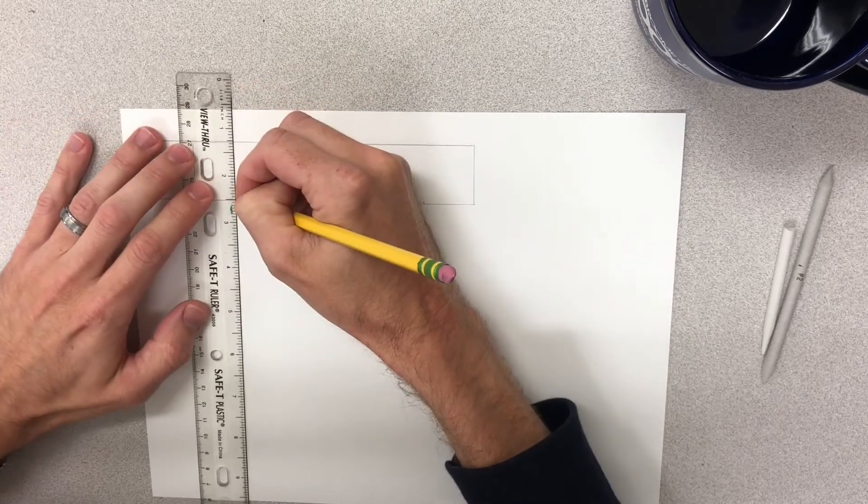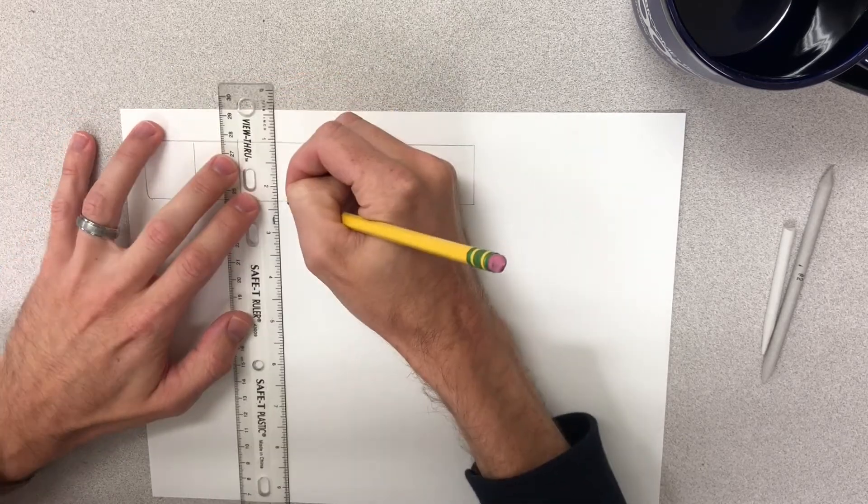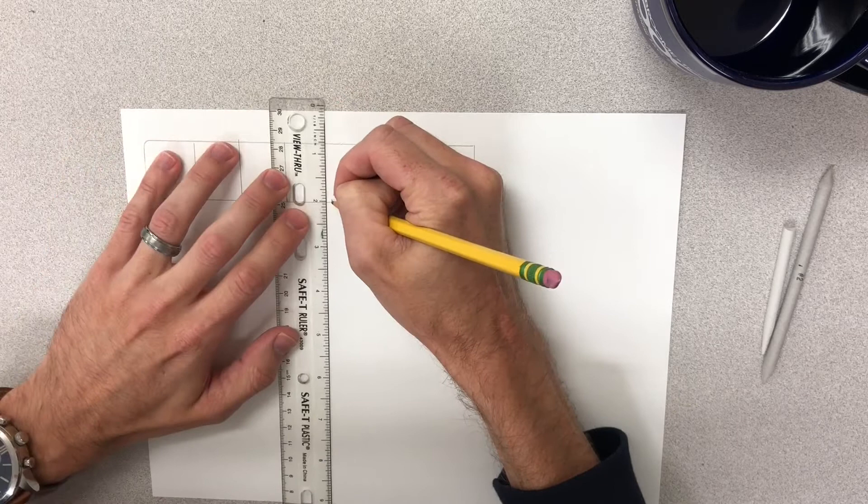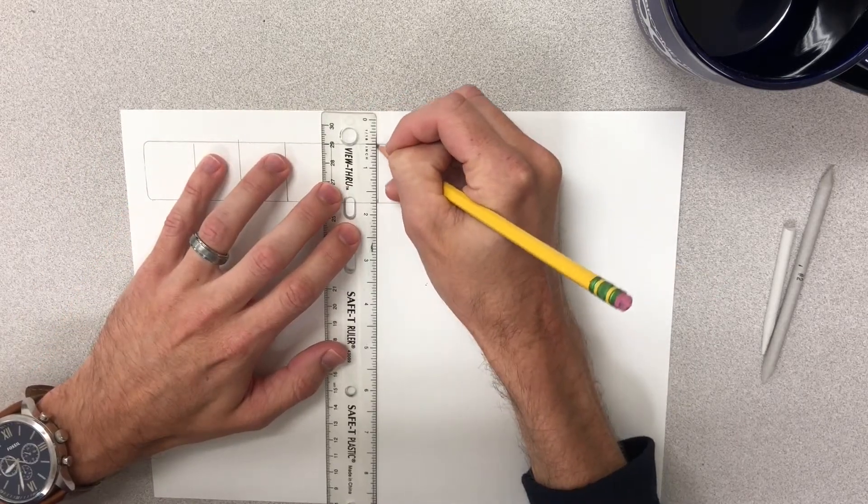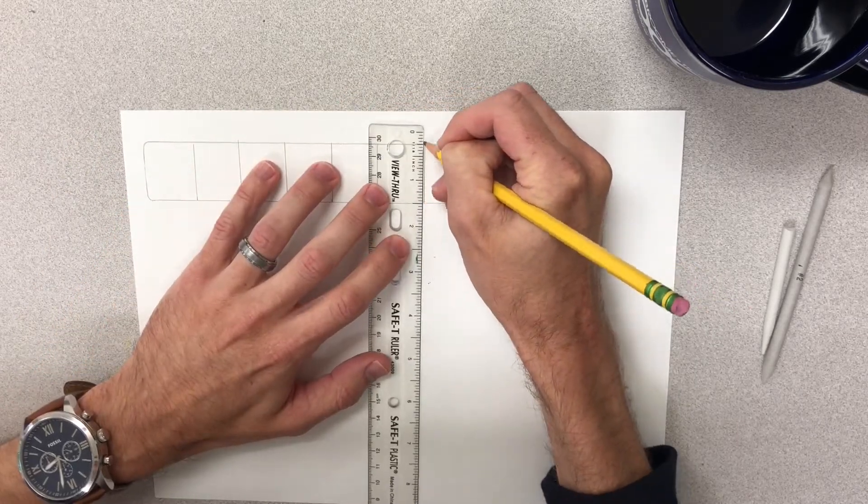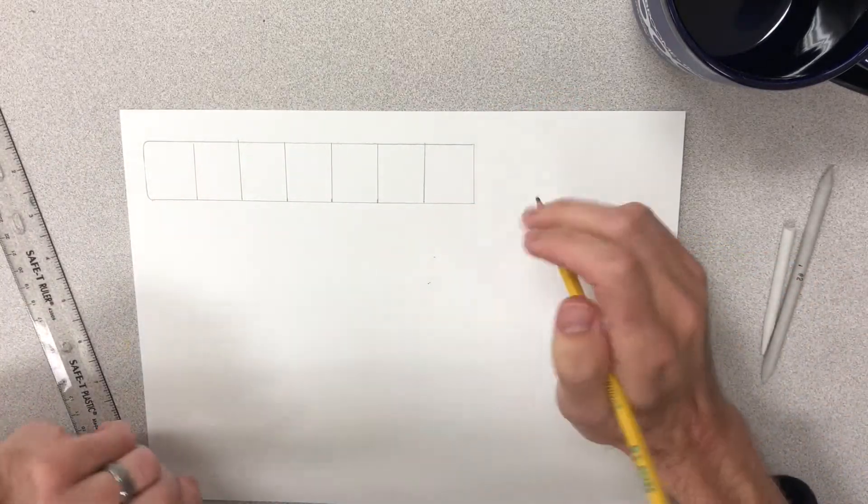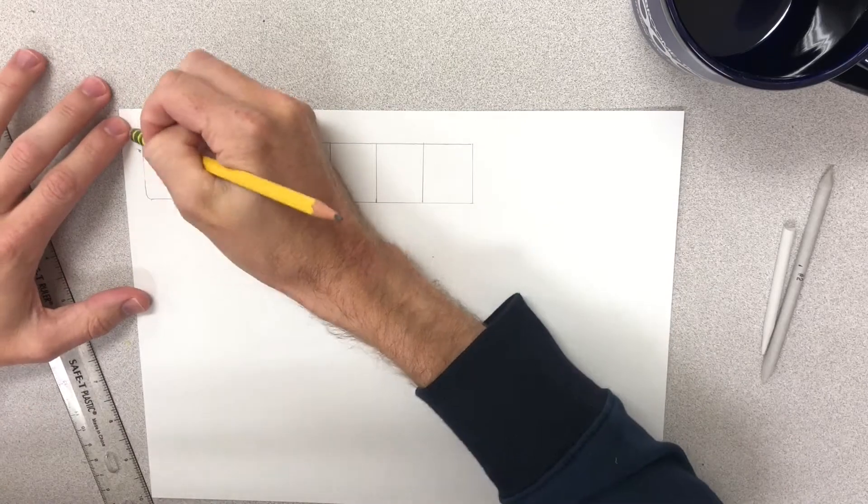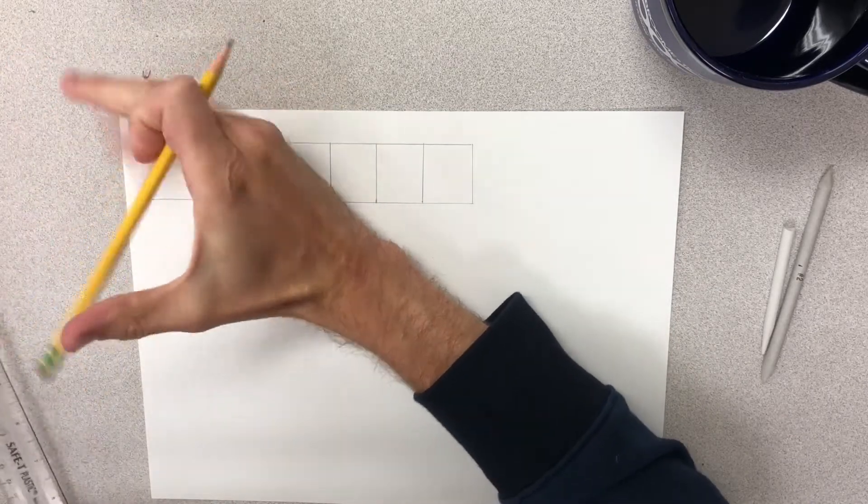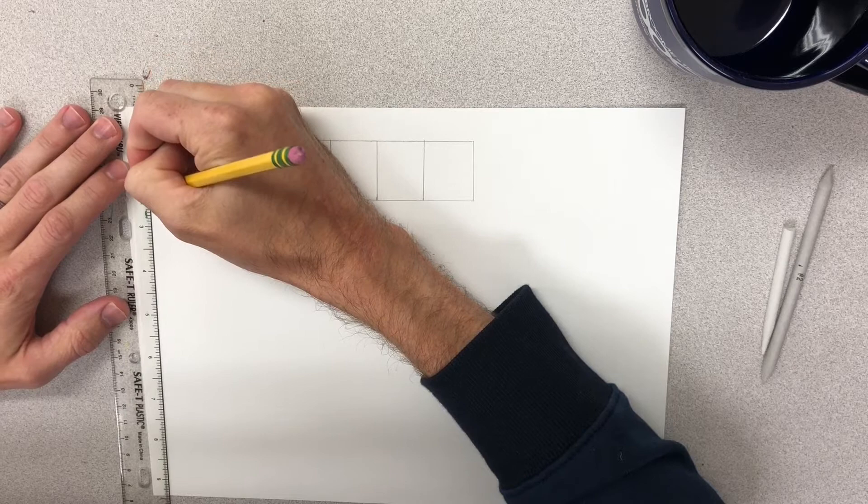I'm just going to close them off. It doesn't have to be perfect. This is just to show the differences in value here. Our goal is going to be to get a complete value change with seven different versions of that.